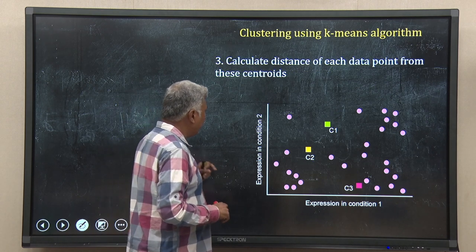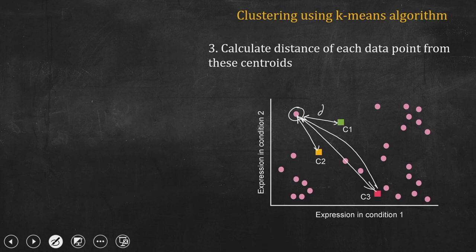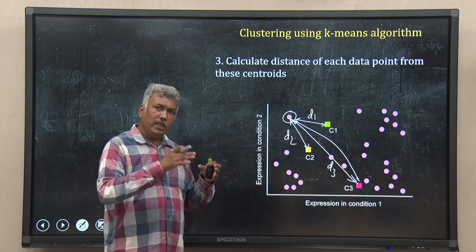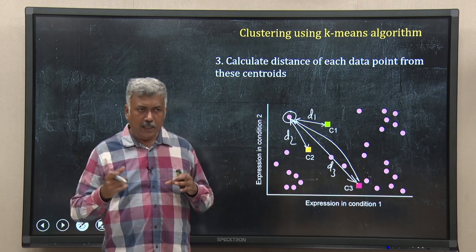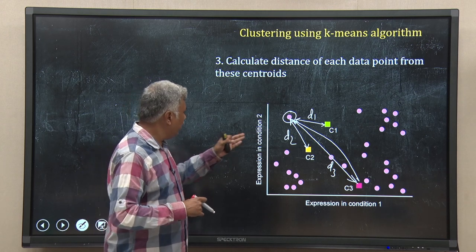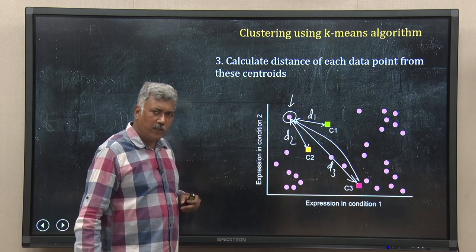The third step: for each data point, you calculate the distance from these centroids. For example, for this data point I can calculate distance d1 to c1, distance d2 to c2, and distance d3 to c3. Do that for all data points. You can use different distance measures, but mostly in k-means the Euclidean distance is used. So d1, d2 and d3 are the Euclidean distances of this particular data point from the three centroids c1, c2 and c3.